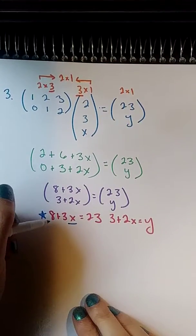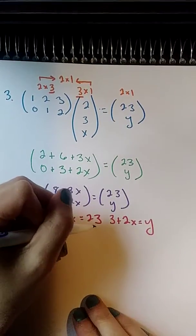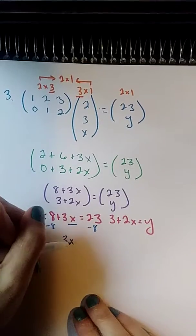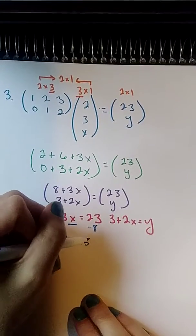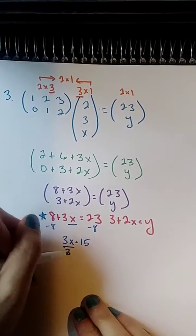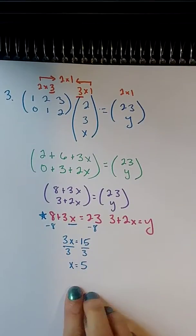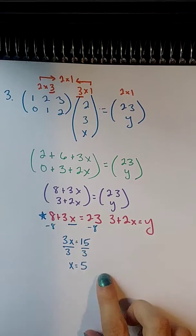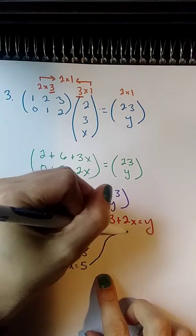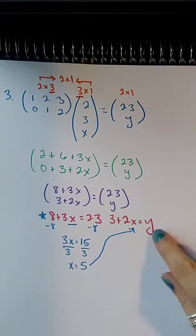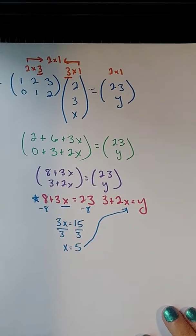So we're going to solve for x. We're going to have to subtract 8 from both sides. So we have 3x equals 15. And then we can divide both sides by 3. So x equals 5. Now I have a value for x. I can take this and plug it into this equation where I see x. So the only variable that I'll have left is y.